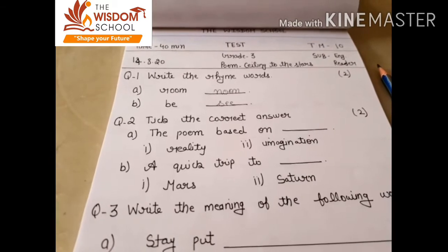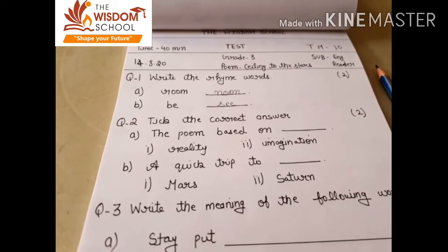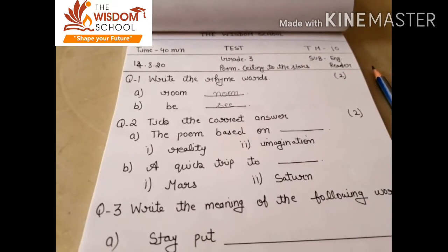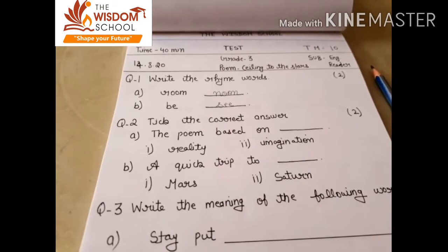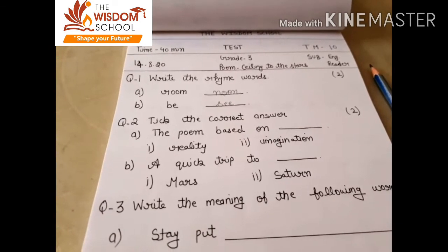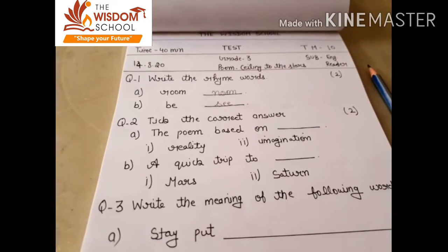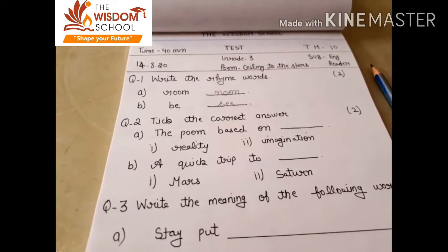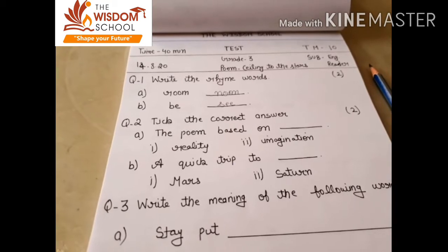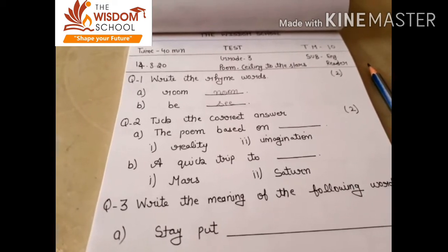Second question, tick the correct answer. The poem based on reality, C, a poem imagination. Yes, the poem is based on imagination. So you have to tick the second option, a quick trip to Mars.